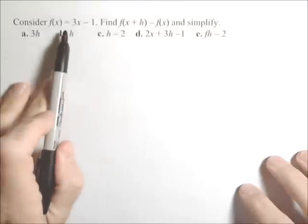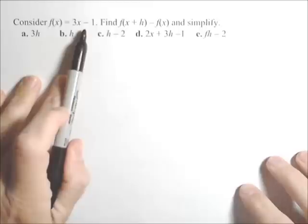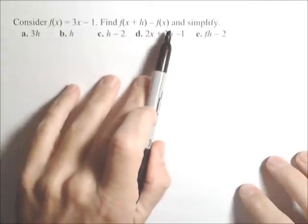In this problem, we're given f(x) = 3x - 1, and we want to find f(x+h) - f(x).